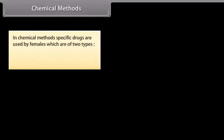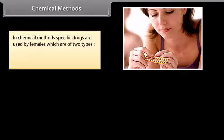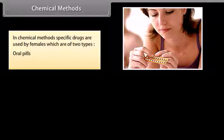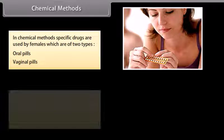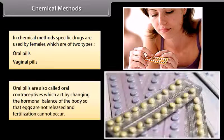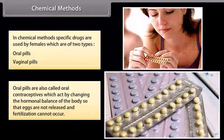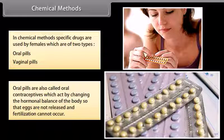In chemical methods, specific drugs are used by females, which are of two types: oral pills and vaginal pills. Oral pills are also called oral contraceptives, which act by changing the hormonal balance of the body so that eggs are not released and fertilization cannot occur.